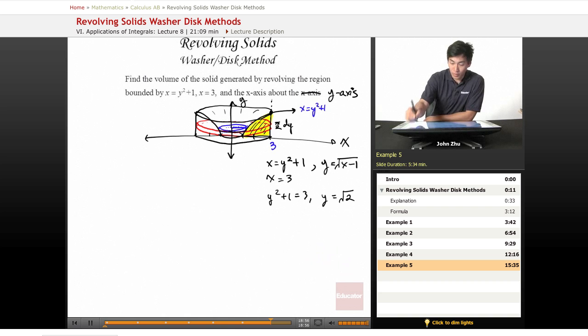So let's take a look at our volume. Just apply directly volume equals pi from 0 to square root of 2, 3 squared minus y squared plus 1 squared dy.